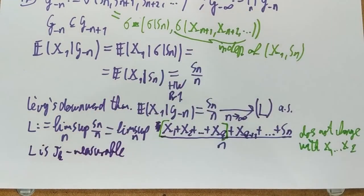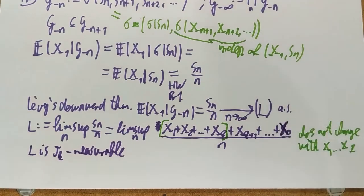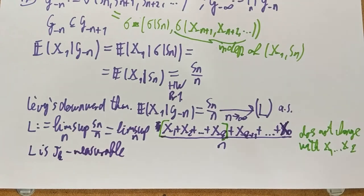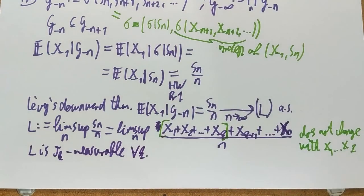So remember, tau_k was the sigma algebra generated by X_{K+1}, X_{K+2}, and so on. And sorry, I noticed that this should be X_N at the end here. So L is tau_k measurable. And now this is true for every k. This is true for every k.